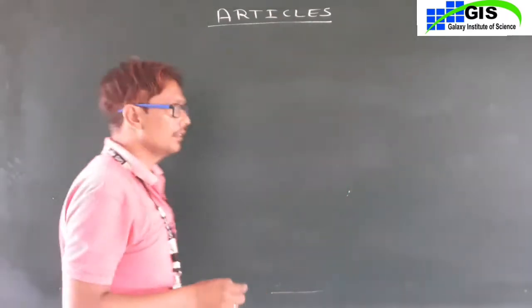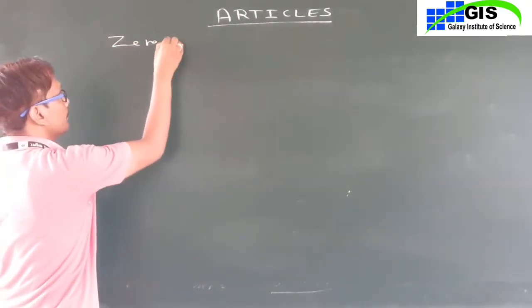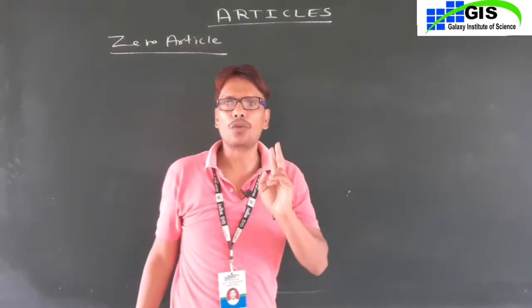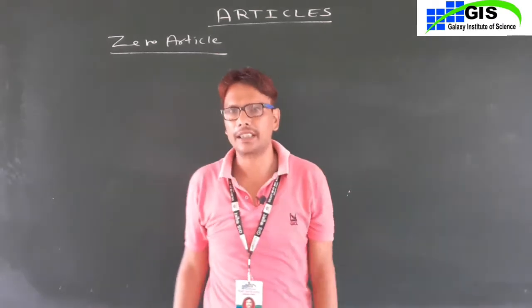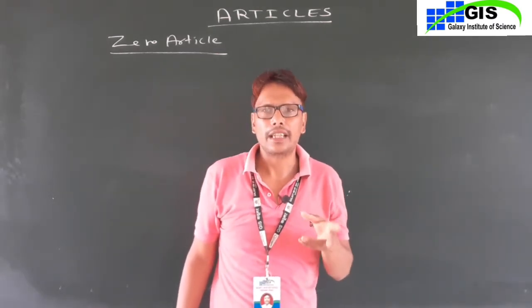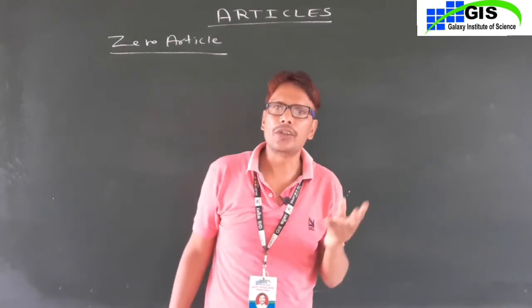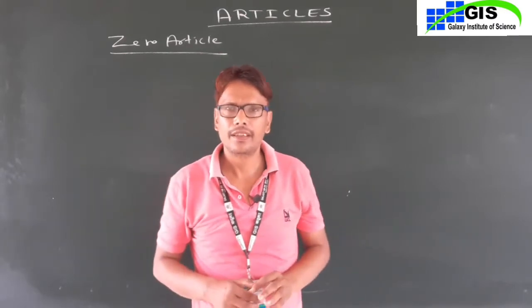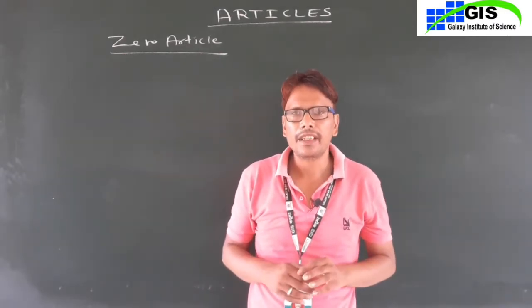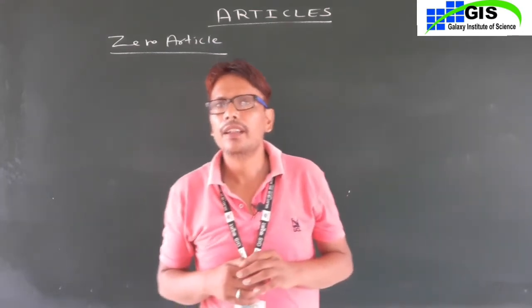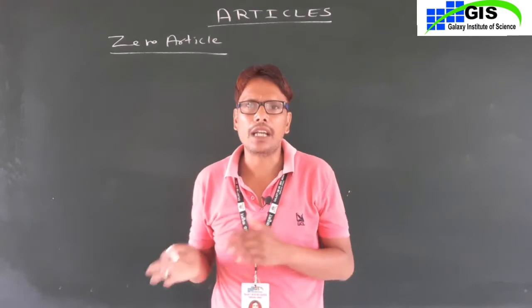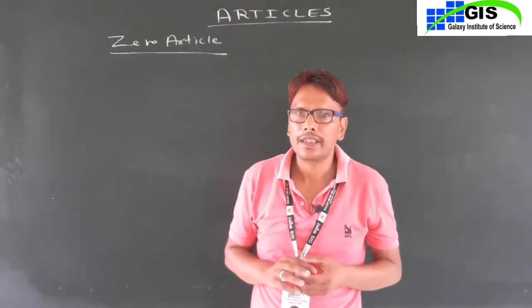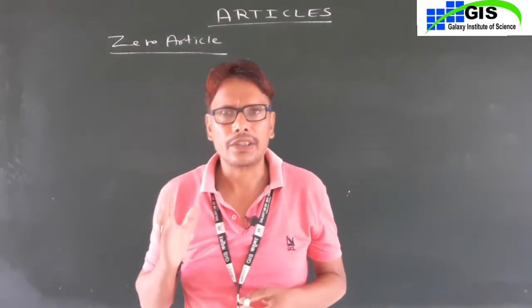We are studying the zero article. In English there are two types of articles and three articles. The two types are indefinite and definite. In these two types we study three articles: A, AN, and THE. Indefinite articles are A and AN; the definite article is THE. In previous classes we have discussed definite and indefinite articles and some rules of zero articles.